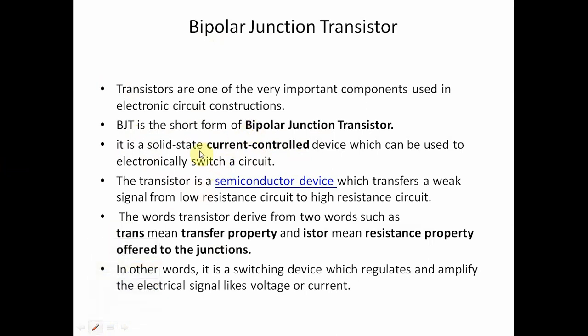Remember that BJT is a current-controlled device. BJT is a semiconductor device which transfers a weak signal from a low resistance circuit to a high resistance circuit. Remember: the transistor transfers a weak signal from a low resistance circuit to a high resistance circuit.